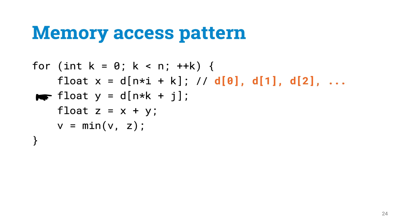However, this second line is way more interesting for us, because it turns out that we are going to access elements like d0, d4000, d8000, and so on. So here we are clearly not reading consecutive memory elements, but we are reading various different parts of the memory.